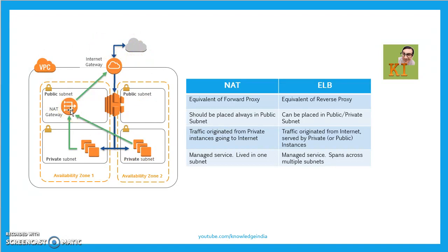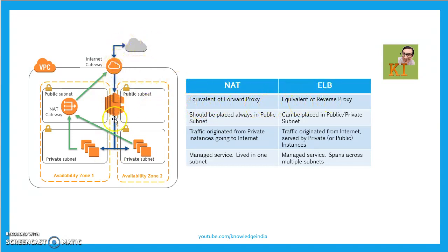If you want to allow requests originating from your private instances to reach the internet, you make use of NAT — Network Address Translation. This is similar to a forward proxy, like in your office where all machines have only private IPs but can still access the internet via a proxy server. Similarly, all internet-bound traffic from private instances goes to the NAT gateway, which sends it out to the internet, gets the reply back, and returns it to the private instances. So traffic originating towards the internet from private machines goes via NAT, and traffic originating from the internet for your private instances comes via ELB.